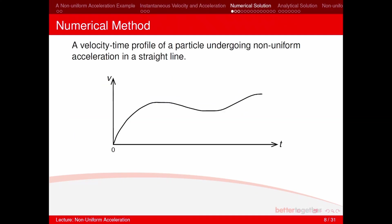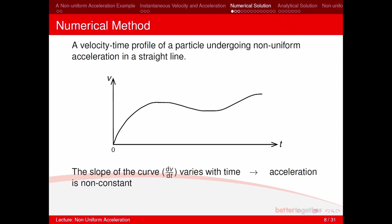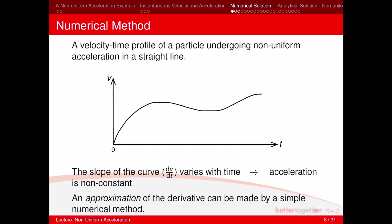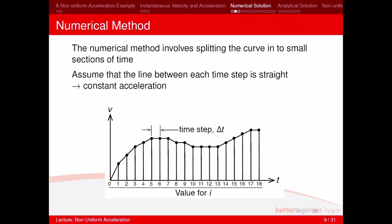There are two ways to solve cases where acceleration is non-uniform. We'll look at the numerical method first. Consider a velocity–time profile of a particle undergoing non-uniform acceleration in a straight line. The slope of this curve — the derivative of velocity — varies with time, so acceleration is not constant. We can approximate dv/dt numerically by splitting the curve into small time sections and assuming the line between each time step is straight, allowing us to assume constant acceleration and use the SUVAT equations.